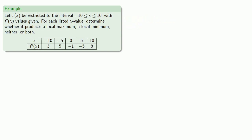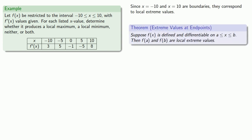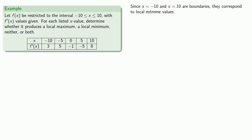So x equals minus 10 and 10 are boundaries, so they're guaranteed to correspond to local extreme values. The only question is, what type? Well, we might begin with the observation that the derivative at negative 10 is 3. So, we know that f(x) is increasing after x equals minus 10, which means that f(minus 10) will be a local minimum.